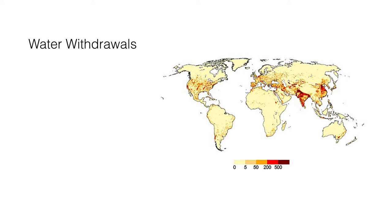This figure shows total water withdrawals around the year 2000 in millimeters per year, based on an average from 1998 to 2002. One millimeter is equal to one liter of water per square meter. Resolution is 0.5 degrees longitude by 0.5 degrees latitude, which is equivalent to about 55 kilometers by 55 kilometers at the equator. Certain parts of the United States, Europe, the Middle East, India, and China show significant water withdrawals. These data are computed by the Global Freshwater Model Water Gap.